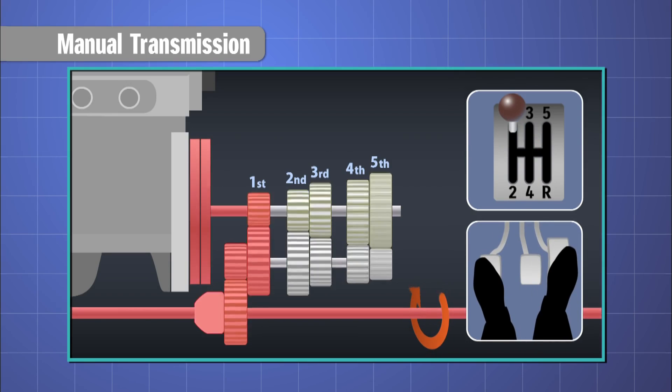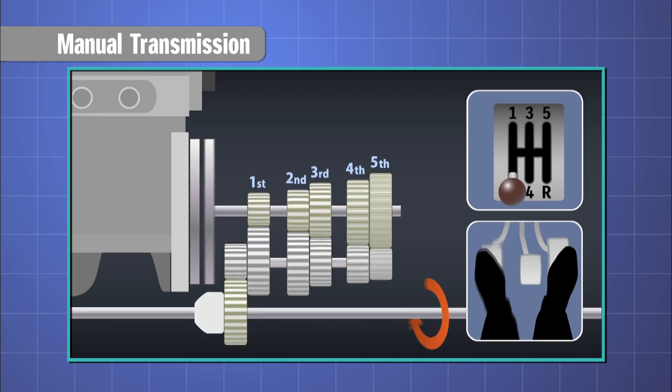When the driver wants to change gear, they will press the clutch pedal, which disengages the transmission from the engine. Now they can shift the gears. Then when they release the clutch pedal, the clutch engages the engine and transmission again.